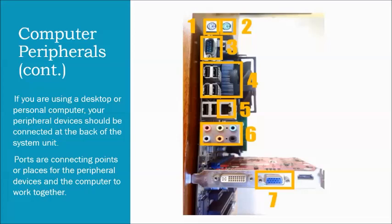Number five is the LAN port — to connect to a local area network we use an RJ45 cable in this port. Number six is the multimedia port, where you insert the mini jack — for microphone, speaker, or headset. Number seven is another type of port similar to the VGA port but it is a female port.